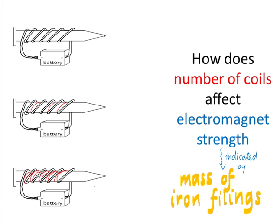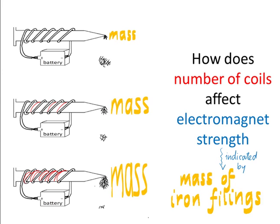So that allows for a lot more precision in the data. You see what mass of iron filings each of the electromagnets picks up and that indicates the electromagnet strength far more precisely than the number of pins does.